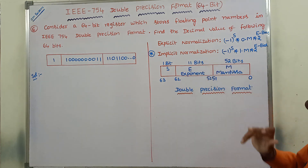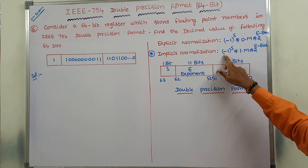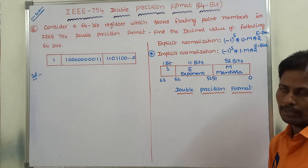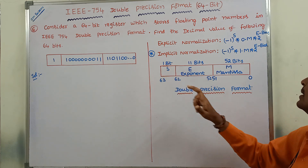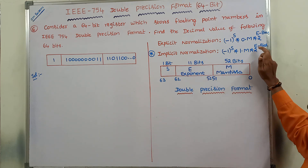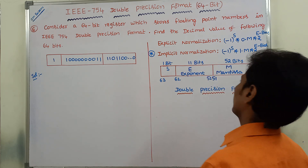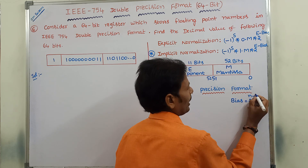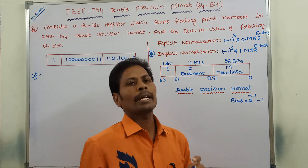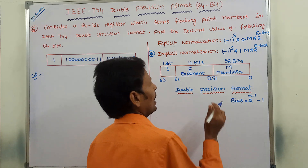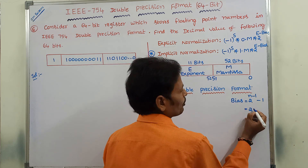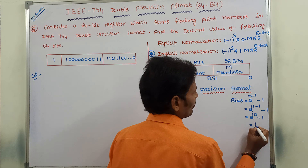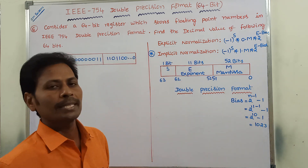In implicit normalization, the formula is: (-1)^S × 1.M × 2^(E - bias), where S is the sign bit, M is the mantissa, and E is the exponent. The bias is equal to 2^(N-1) - 1, where N is the number of bits allocated for the exponent. Since 11 bits are allocated for exponent: bias = 2^(11-1) - 1 = 2^10 - 1 = 1023.